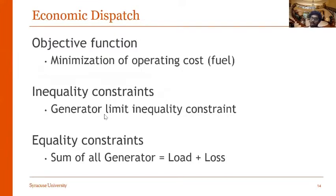Some of these constraints are generator limit inequality constraints, which means you cannot produce more than a specific amount of power for a given generator, nor can you produce less than a specific set point. For the entire power system, you have to make sure the sum of all power generated equals the demand of the load plus line losses.